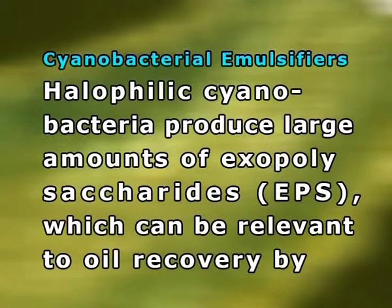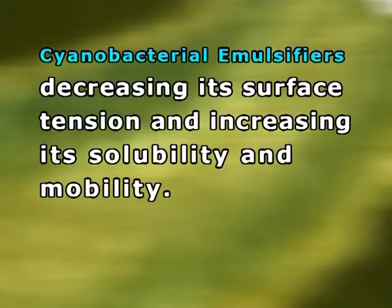Halophilic cyanobacteria produce large amounts of exopolysaccharides (EPS), which can be relevant to oil recovery by decreasing its surface tension and increasing its solubility and motility. EPS, when gelated under alkaline conditions, was employed to remove dyes from textile effluent. The halophilic cyanobacterium Aphanothece halophytica was used for the production of EPS, and its yield was increased tenfold by immobilizing the cells on light-diffusing optical fibers.